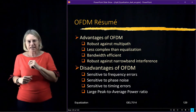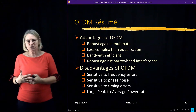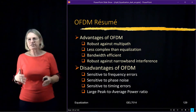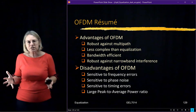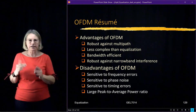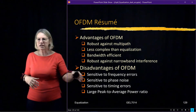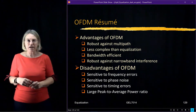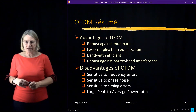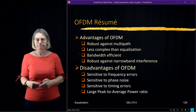The disadvantages of OFDM: it is sensitive to frequency errors, phase noise, and timing errors. Everything has to be lined up pretty nicely in an OFDM system, so there is some sensitivity there that you have to deal with. And of course, the large peak-to-average power ratio is a challenge with OFDM.